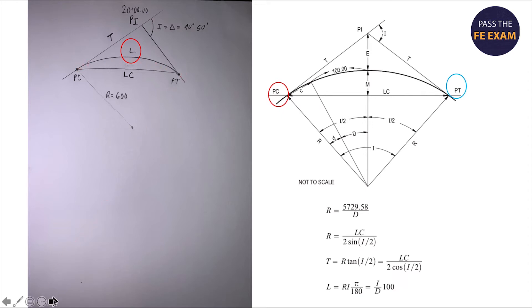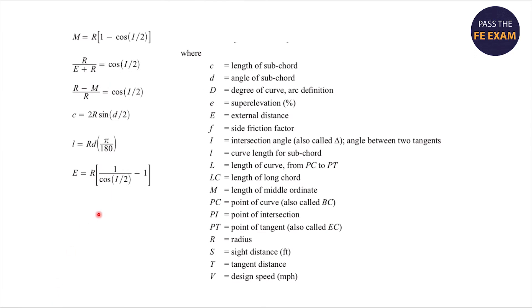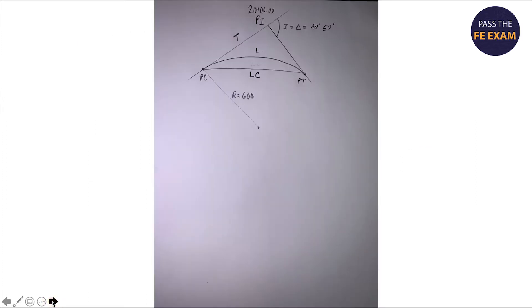How did I know that? There's also information in your handbook, the list of definitions related to the curves. You'll see in that list of definitions is L, which equals the length of curve from the PC to the PT. That would tell you that if you can figure out what that PC is, then we can add the length to it.